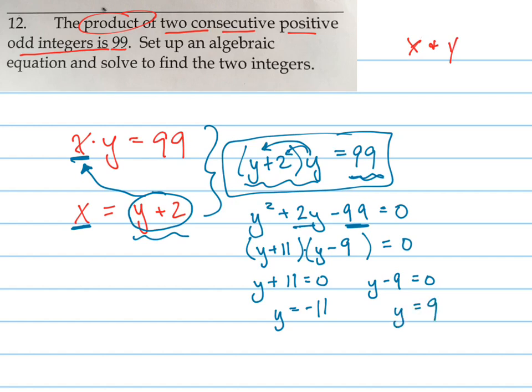And now I look at the question again. It says the product of two consecutive positive odd integers. So which one do I not have to look at? I don't even have to consider negative 11 because that's a negative number, and I only want the positive one. There's actually two answers that would work, but I don't need both of the answers. I just need the positive version of the answer. And so y equals 9.